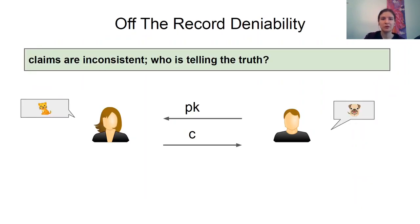Nevertheless, we also consider an additional definition of deniability which we call off-the-record deniability, which aims to capture some security even in the inconsistent case. We are inspired by the fact that an ideal secure channel will provide some protection to the parties even in this case. For example, the parties maybe didn't have a chance to coordinate on their fake stories. Or maybe the receiver turned against the sender and decided to prove to everybody else that the sender sent a particular sensitive message. It can do so by revealing its true secret coins. Even though the sender can make a counterclaim by giving fake coins consistent with a different plaintext, it could be that the combination of receiver true coins and sender fake coins still reveals what the true plaintext is.